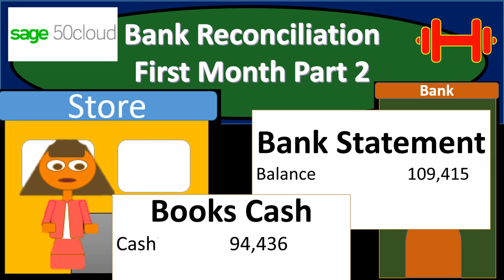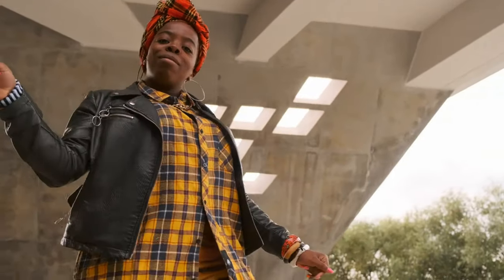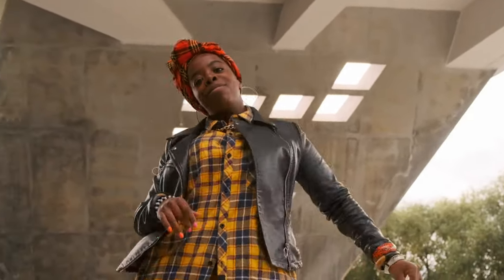In this presentation, we will continue on with our bank reconciliation for the first month of operations. Last time we focused on the beginning balance and the deposits. This time we're going to be focusing in on the checks and the money going out of the bank account. Time to get started with Sage 50 Cloud Accounting.